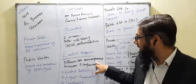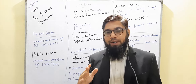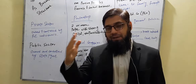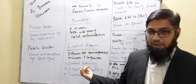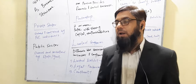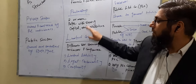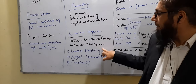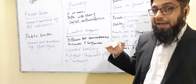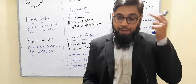Sole trader and partnership are called unincorporated businesses. Unincorporated means they don't have a separate legal body — 'corp' means body. The basic difference between companies and sole trader or partnership comes down to three key things. First is limited liability: a company has limited liability, whereas unincorporated businesses — sole trader and partnership — do not.